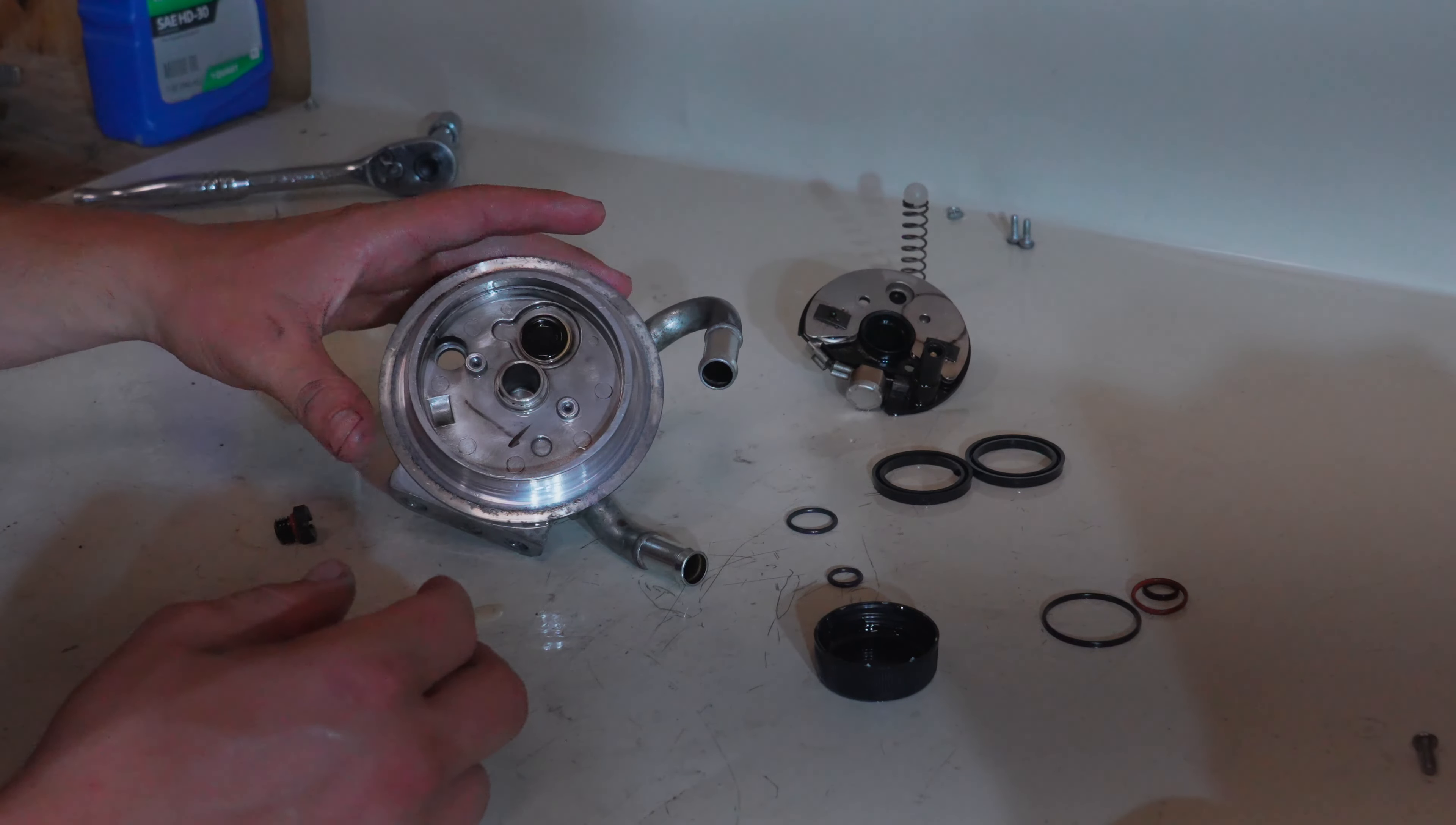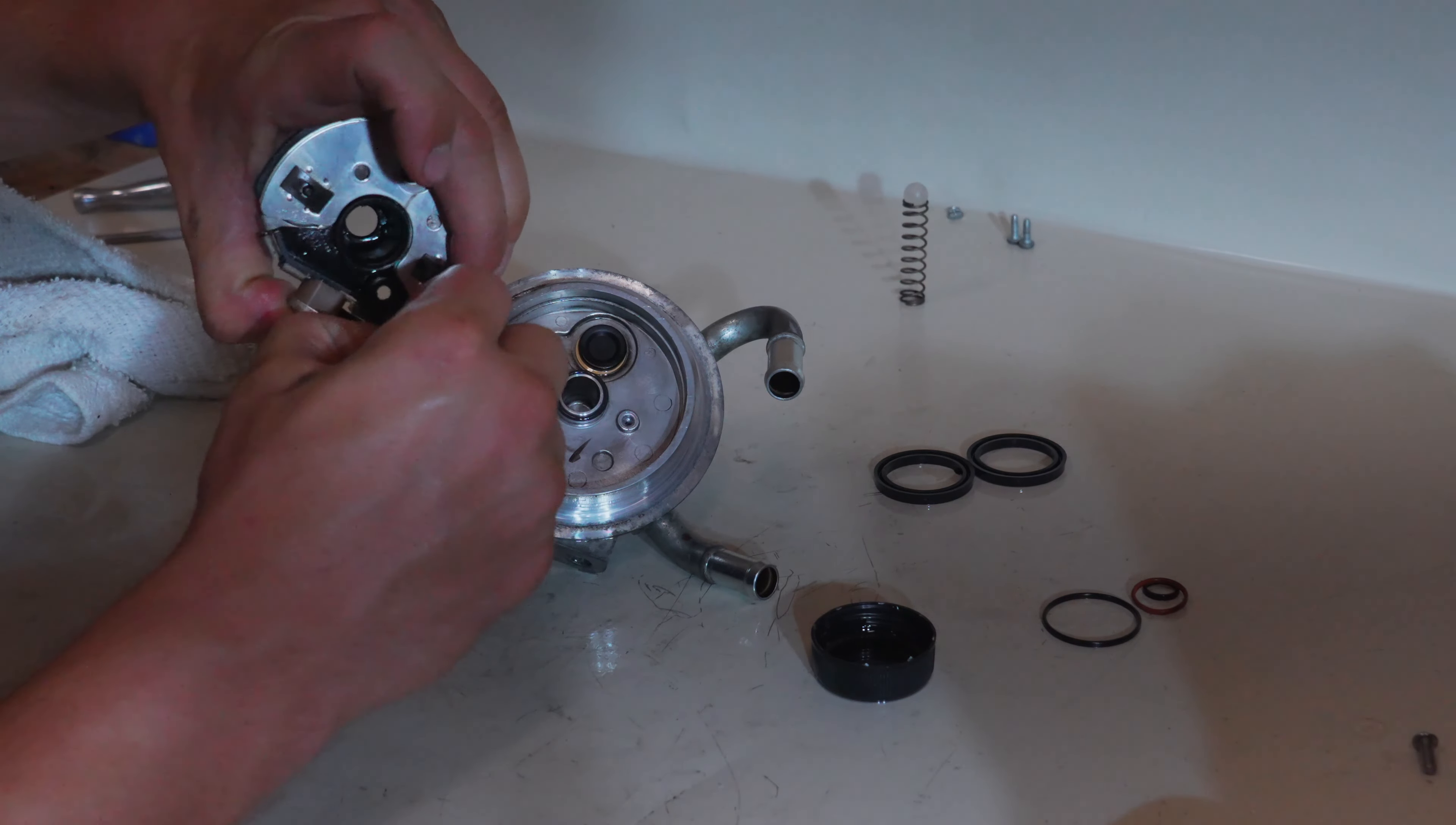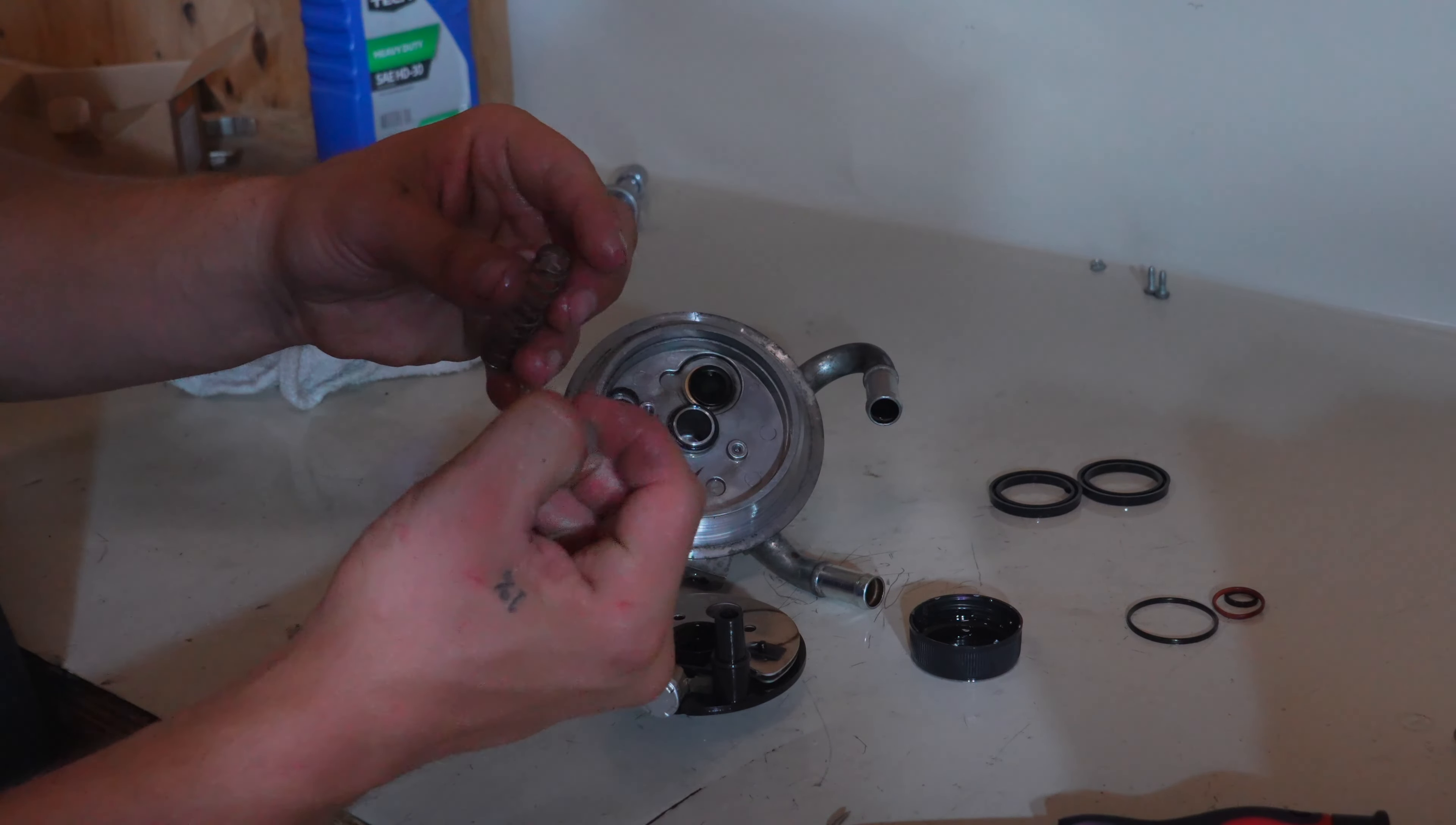Now we'll go ahead and flip this over, start working on the underside of it. We'll lube up this medium sized O-ring. We'll set it on the center shaft right here. And then we'll lube up our small O-ring and you can either set it on top of this guy right here or you can install it inside of that recess there.